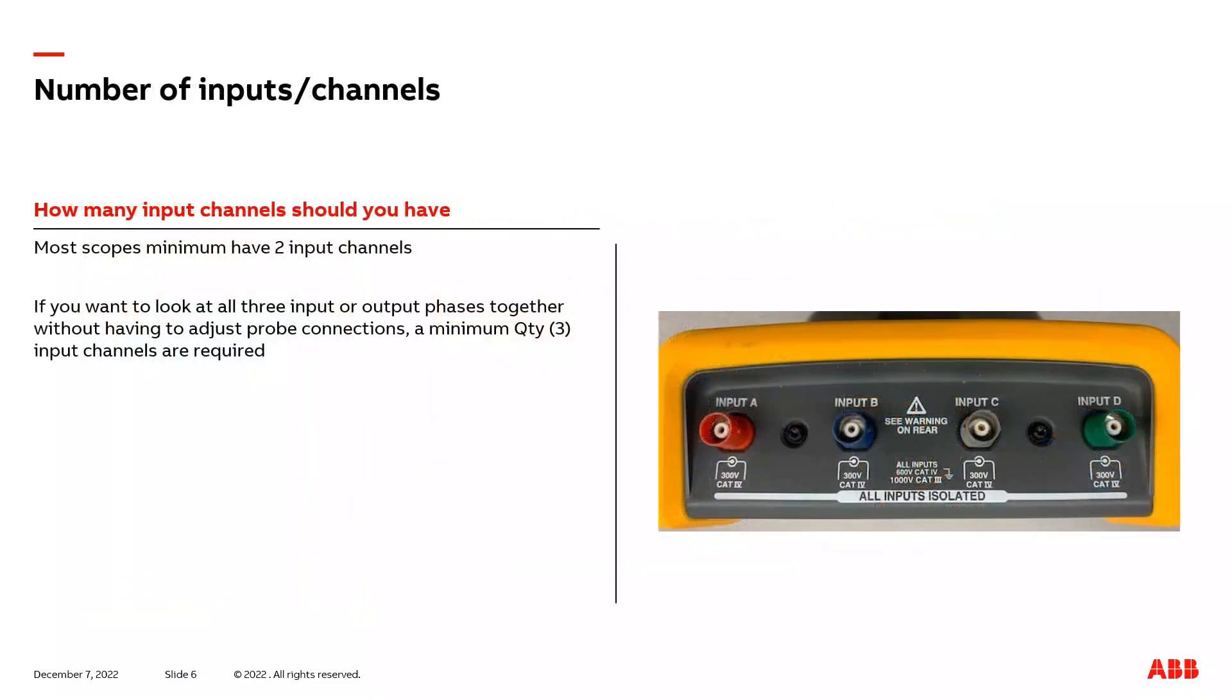So how many input channels should your scope have? I recommend your scope have a minimum of quantity three input channels. The reason I say quantity three is because VFDs on the input side and output side are three phase devices. And we also have to think about lockout tagout safety procedures and time spent on the job. If I lockout and tagout the drive once, make all my connections either voltage probes or current probes to the drive and then to the scope, I then can turn the VFD back on and individually look at all the individual phases at once. Or I could look at all the phases at one time on the scope. But I'm not having to re-lockout tagout the VFD to move a voltage or current probe every time I want to look at a different channel. So that's why quantity three input channels is a benefit on your scope.